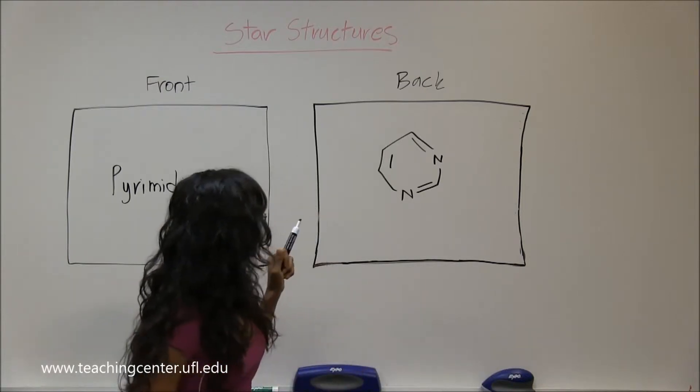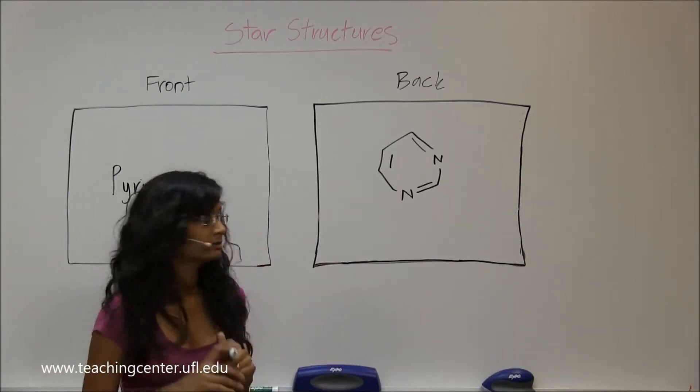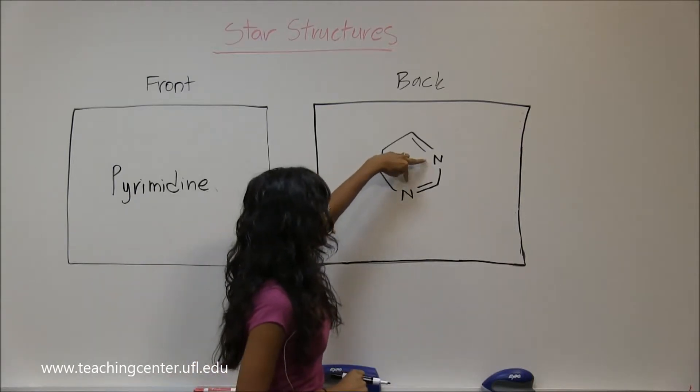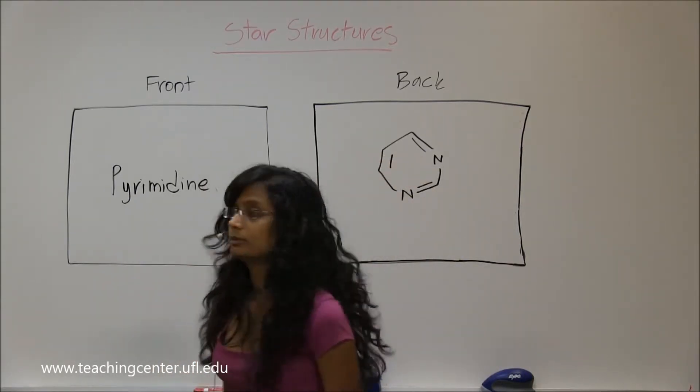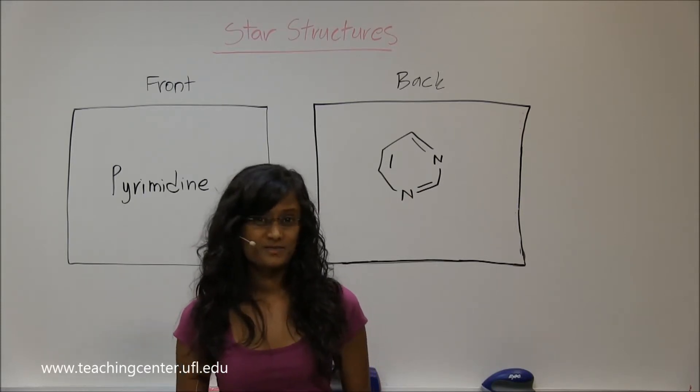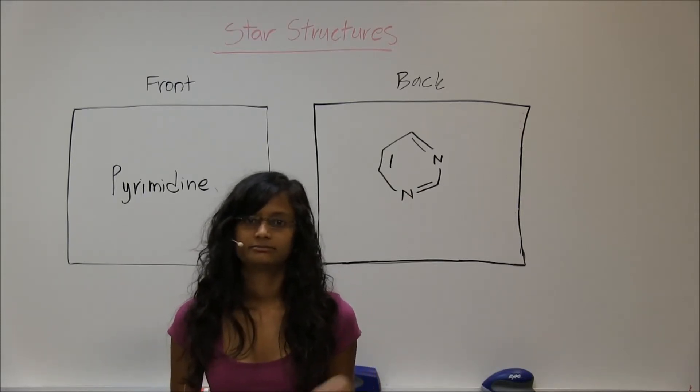So this one ring which is aromatic, six-member ring, and two nitrogens. This is pyrimidine and you'll see this back in biochem.